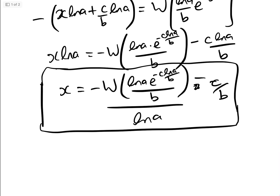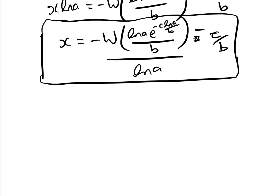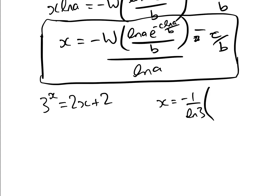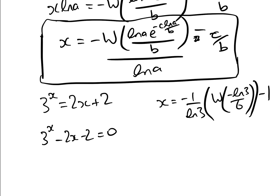In a previous video — the link to which is in the description — we looked at 3 to the x equals 2x plus 2, and we got the answer x equals minus 1 over log 3 times W of minus log 3 over 6, minus 1. Let's verify this using our general formula. We have 3 to the x minus 2x minus 2 equals 0, so a equals 3, b equals minus 2, and c equals minus 2.